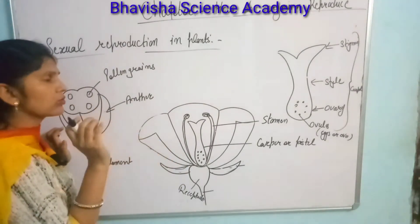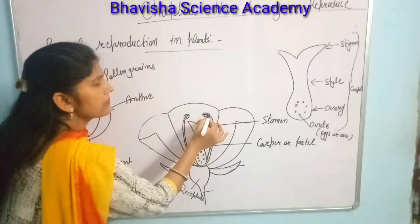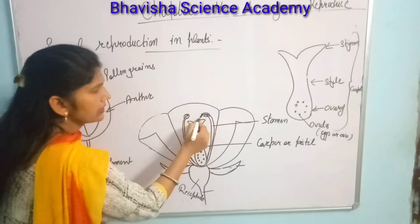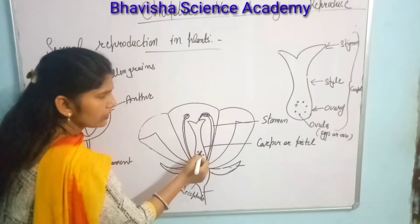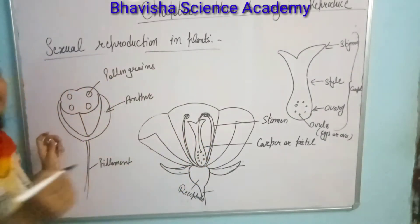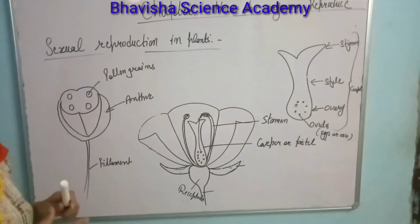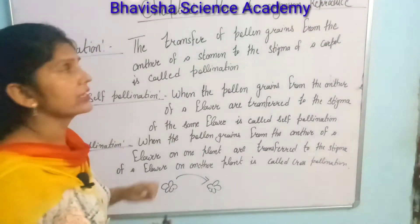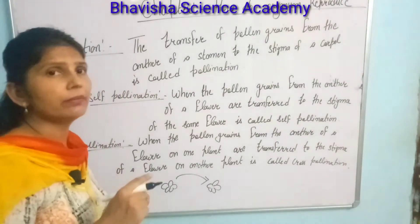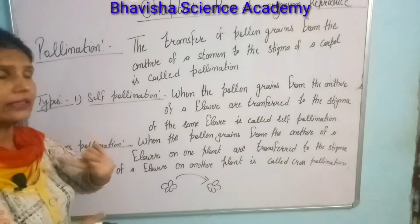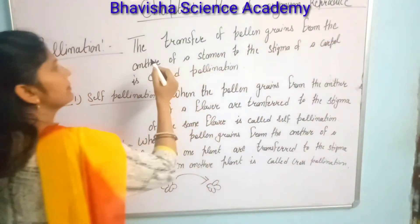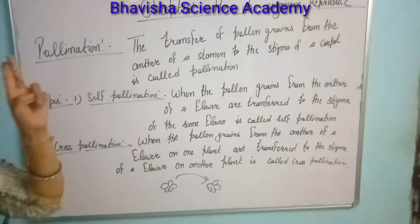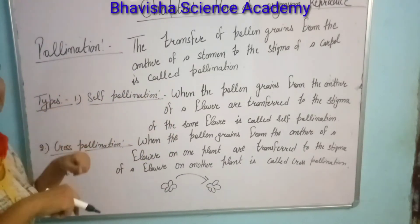Due to any environmental or internal factor, the pollen grains come into contact with the egg. That process is known as pollination. Pollination is the transfer of pollen grains from the anther to the stigma. It is mainly of two types: self-pollination and cross-pollination.